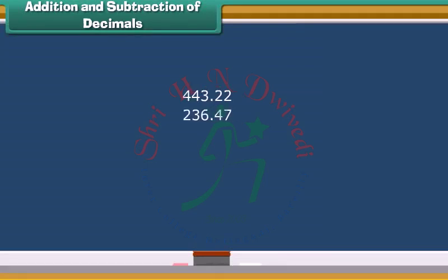Decimals are easier to add or subtract just like the whole numbers. For this purpose, you have to line up the decimals first. See, it's easy.